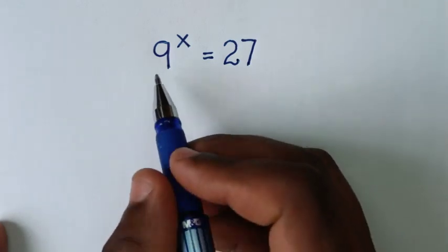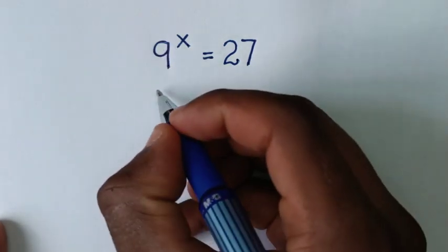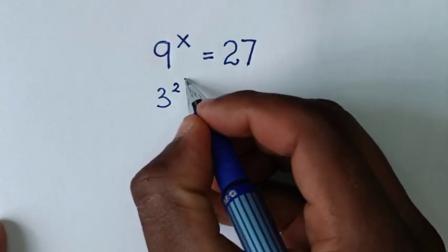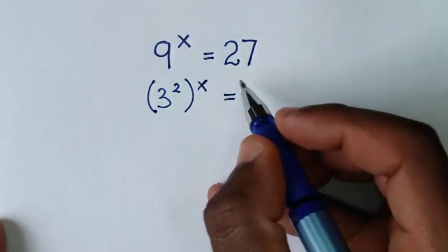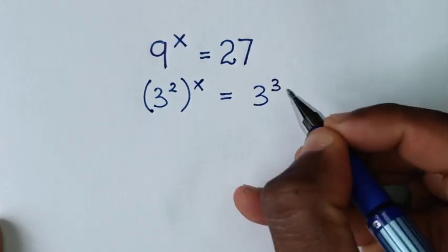Now in the first step from this 9, 9 is same as 3 square. Then bracket this power of x is equal to 27 is same as 3 power 3.